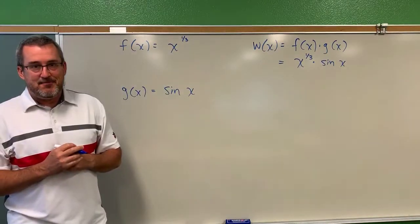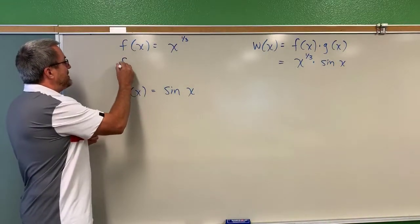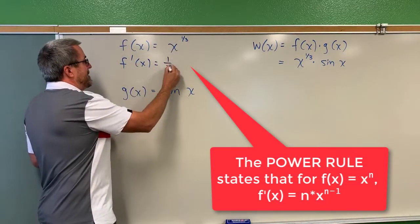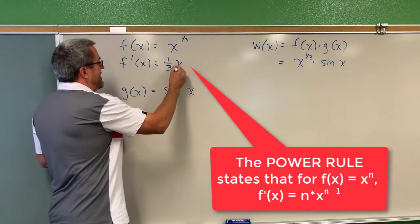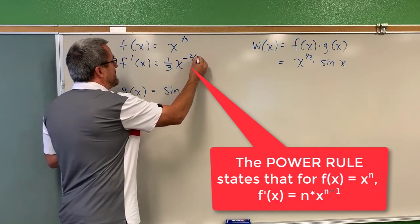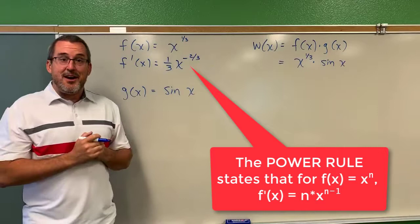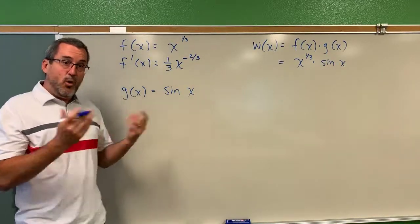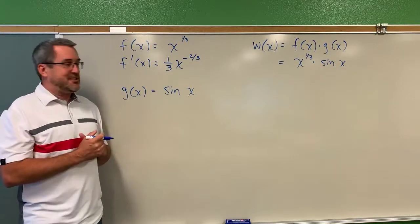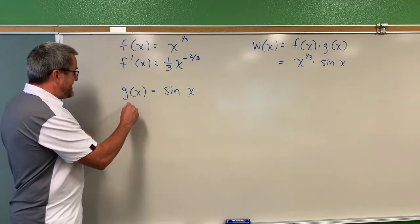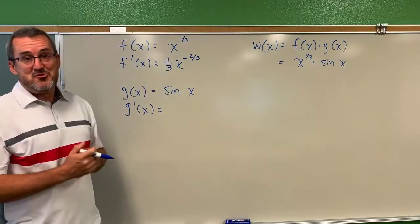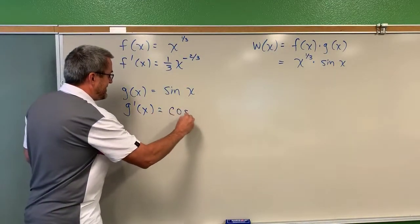Consider the function f of x, which is x to the one-third power. You probably know that we can take the derivative by bringing that exponent down front as a coefficient and then decreasing that power by one. If you decrease one-third by one, you get negative two-thirds — that's the derivative using the power rule. You also probably know you can take the derivative of trigonometric functions. Consider g of x equals the sine of x; the derivative of sine of x is the cosine of x.